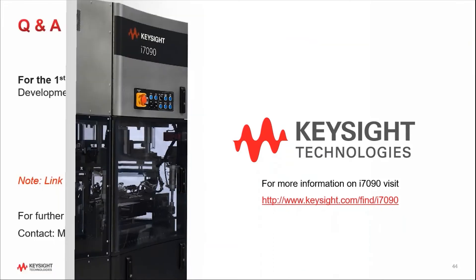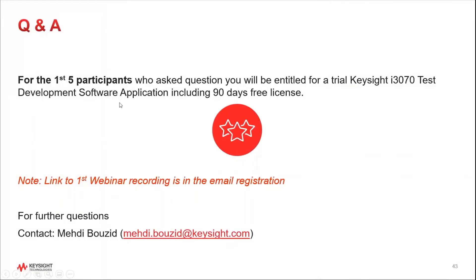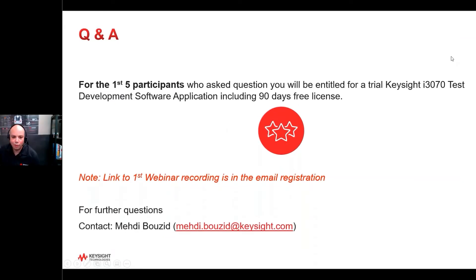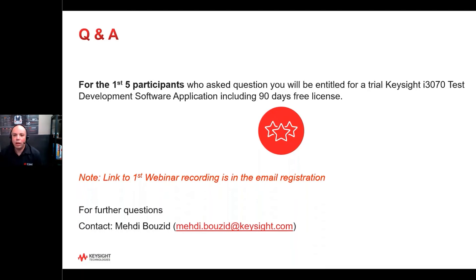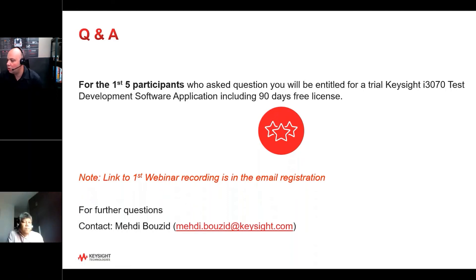Now let's move to the Q&A. As a surprise for this session, for the first five participants to ask questions, you will be entitled to a trial of the Keysight i7090 test development application software, including a 90-day free license. For the audience, you have two options: either type your questions into the chat, or raise your hand and ask your question live — we will unmute you.